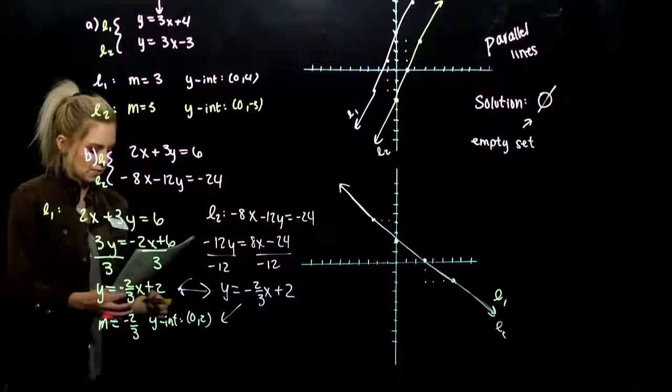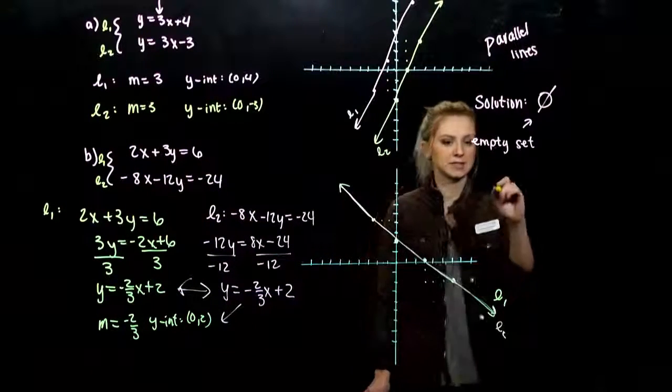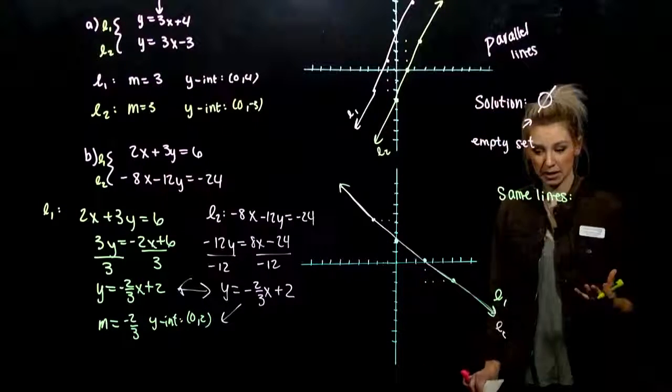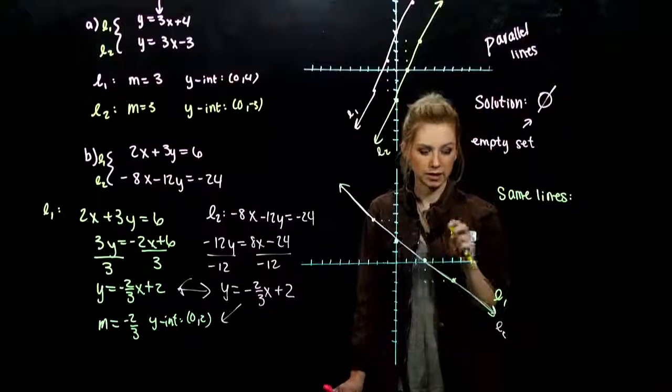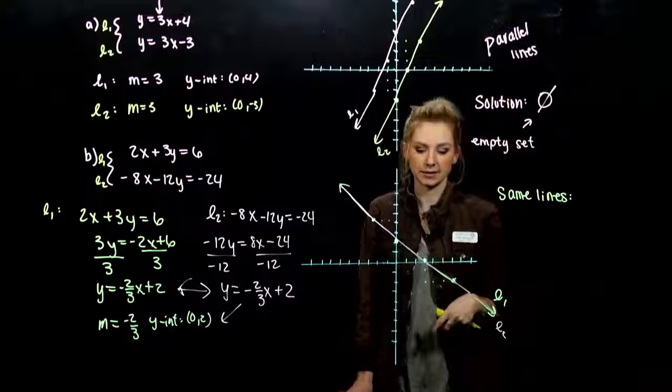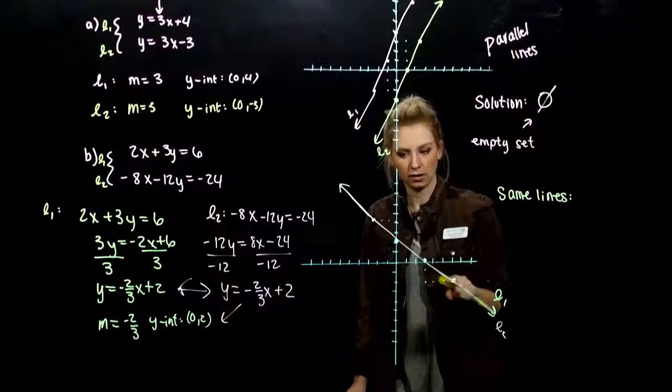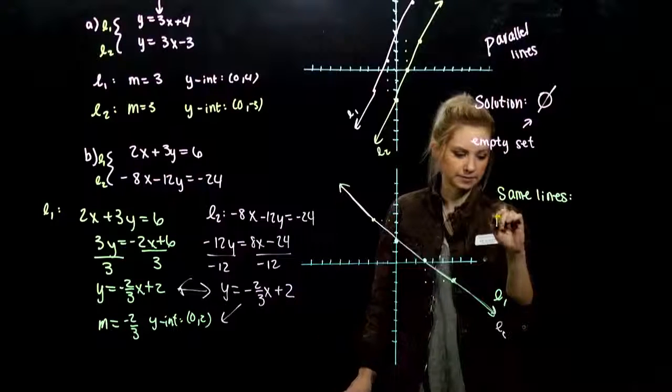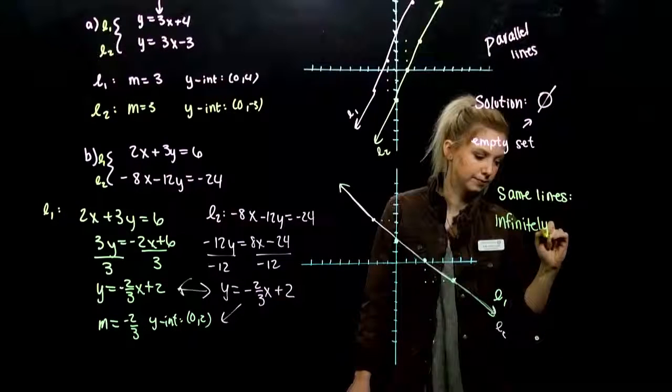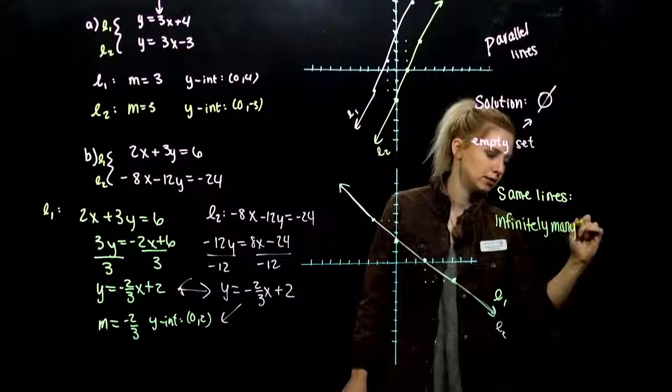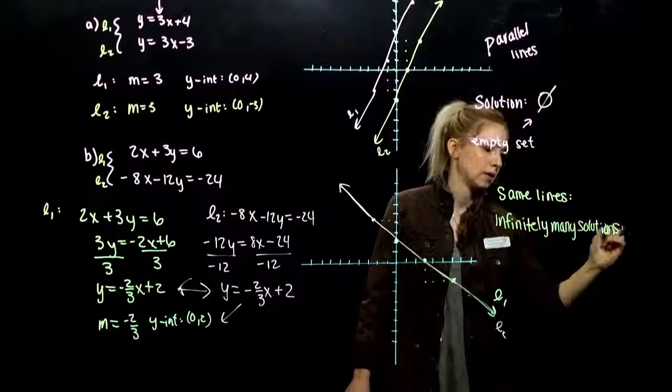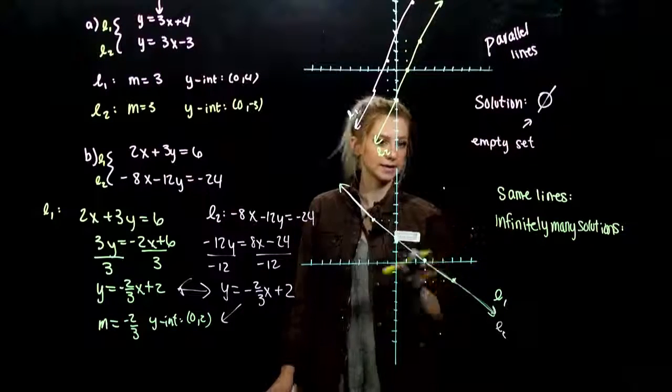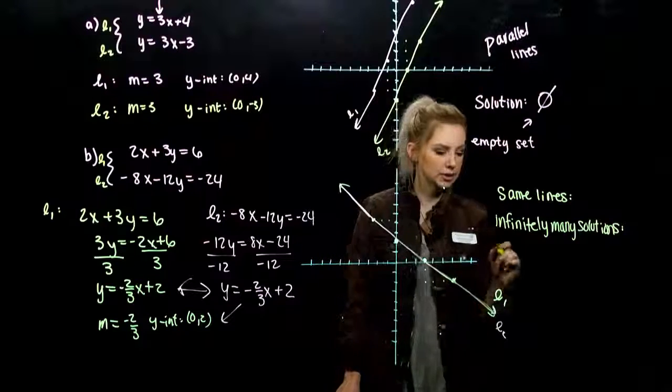So what does that mean for our solution set? Since they're the same lines, it doesn't matter what I choose. If I choose this point on the yellow line, it's going to satisfy the pink at the exact same time. Same for any point along this line that goes on forever. So we have infinitely many solutions, infinitely many solutions, but they all have to lie on this line. I can't choose random points out here. It's not going to satisfy them both.